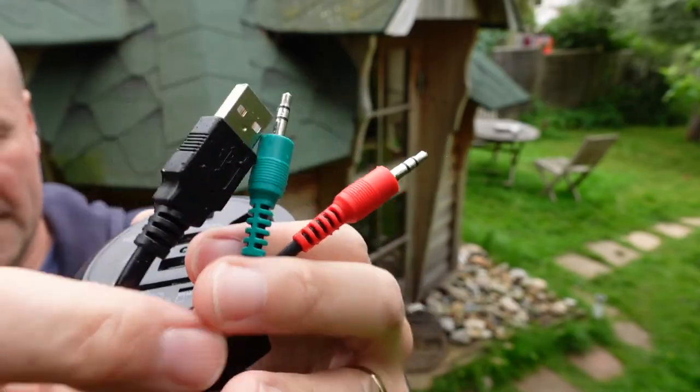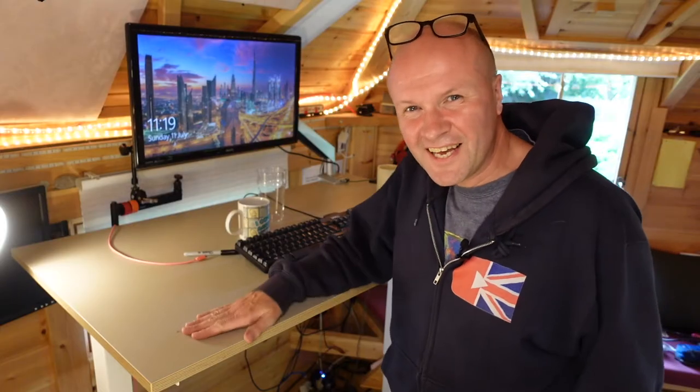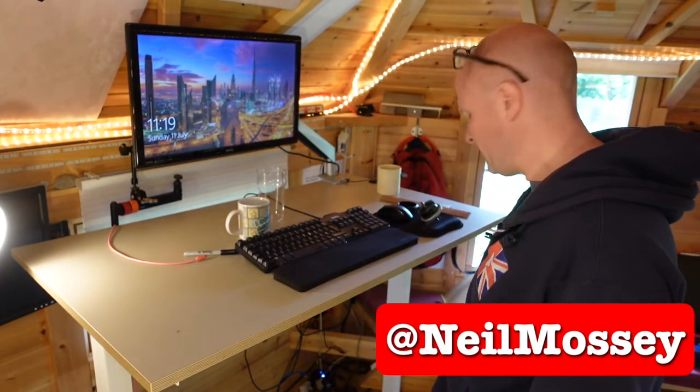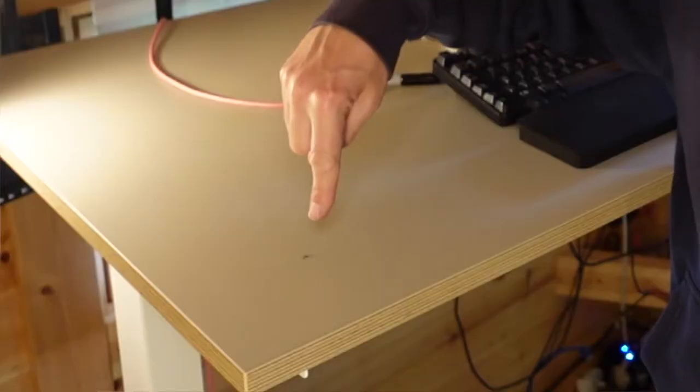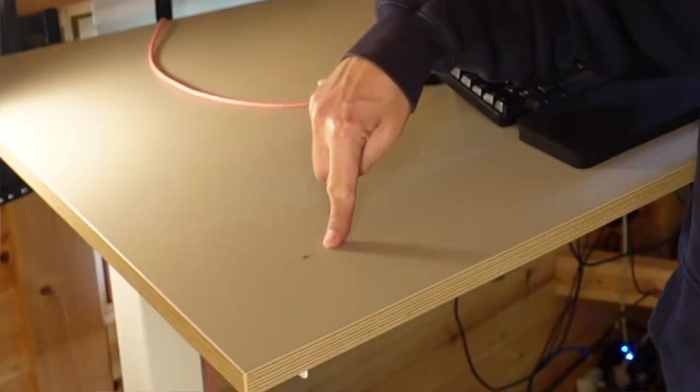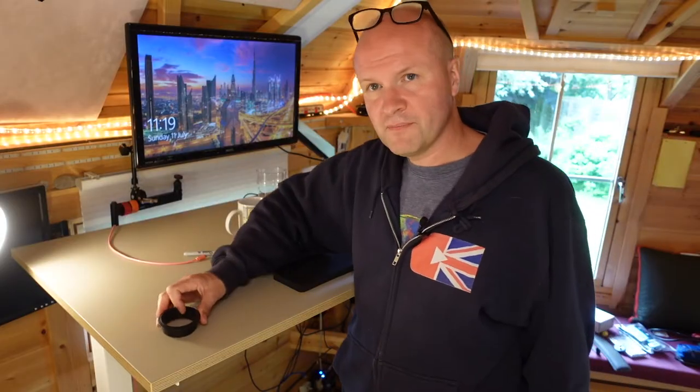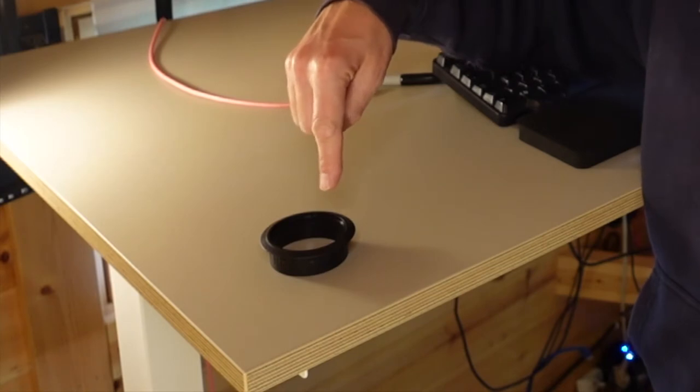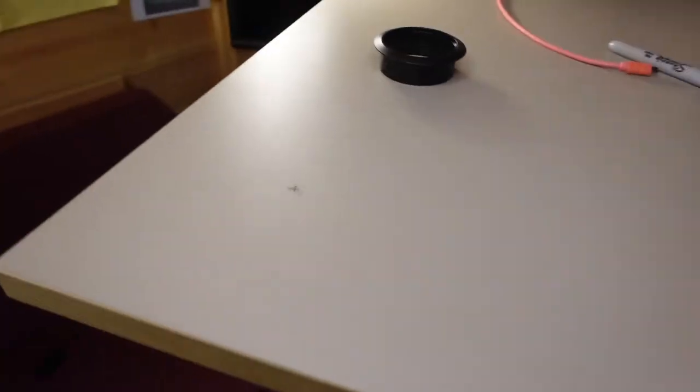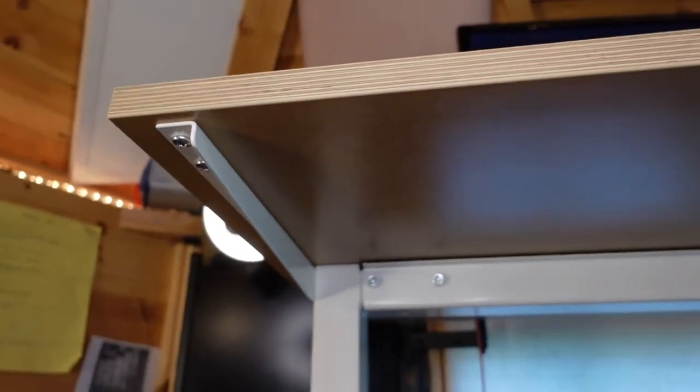This is my Ikea Scarsta standing desk and I've got it raised to quite a high level. Probably could go up even further but I just wanted to get it in shot so you could see. I've marked this spot here. This is where I want the USB port to be. I've made it 10 centimeters in and 10 centimeters from the side and I've planned it so that it doesn't hit anything underneath. Fingers crossed.